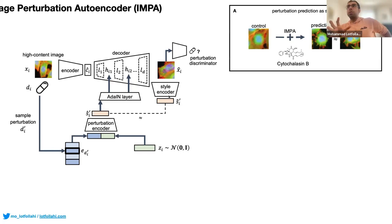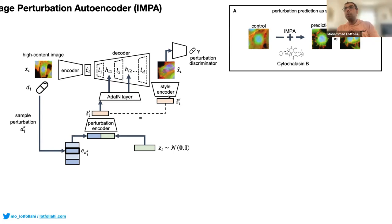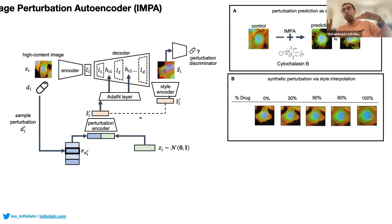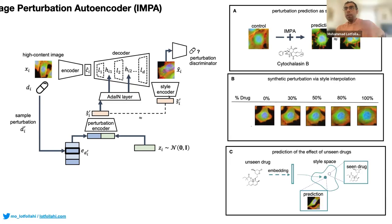Once this mapping is learned, at test time you can feed an unperturbed cell and condition on different drugs — even unseen ones not in training — to predict how those perturbations will affect the image. You can also perform synthetic interpolation between different drugs and modes of action to traverse the manifold and see how different drugs affect the image, enabling dose optimization and prediction of unseen drug effects or genetic perturbations.